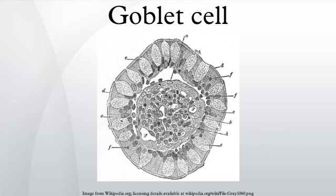They are found scattered among the epithelial lining of organs such as the intestinal and respiratory tracts. They are found inside the trachea, bronchus, and larger bronchioles and respiratory tract, small intestines, the colon, and conjunctiva in the upper eyelid. They may be an indication of metaplasia, such as in Barrett's esophagus.